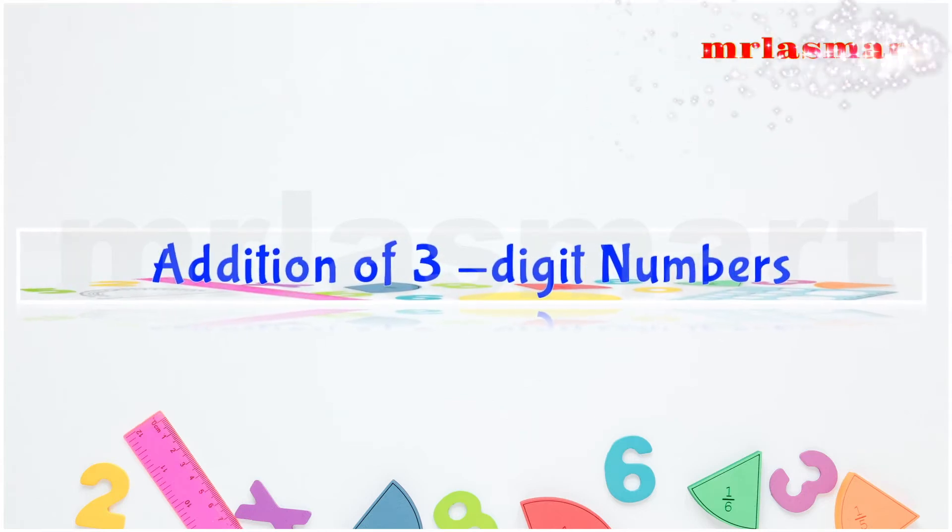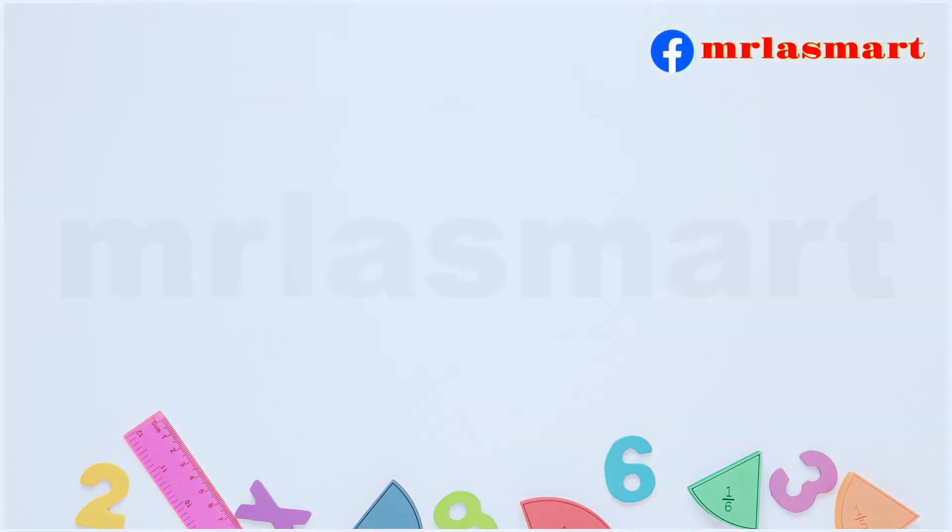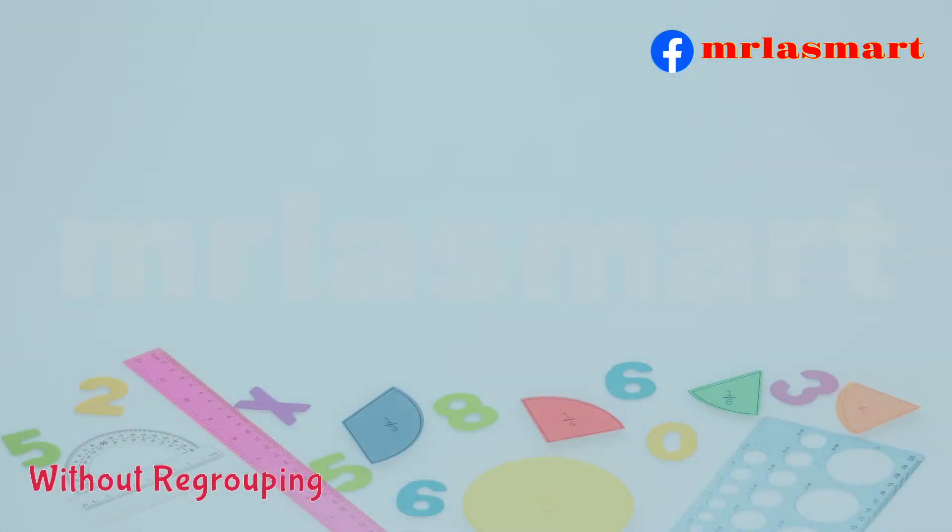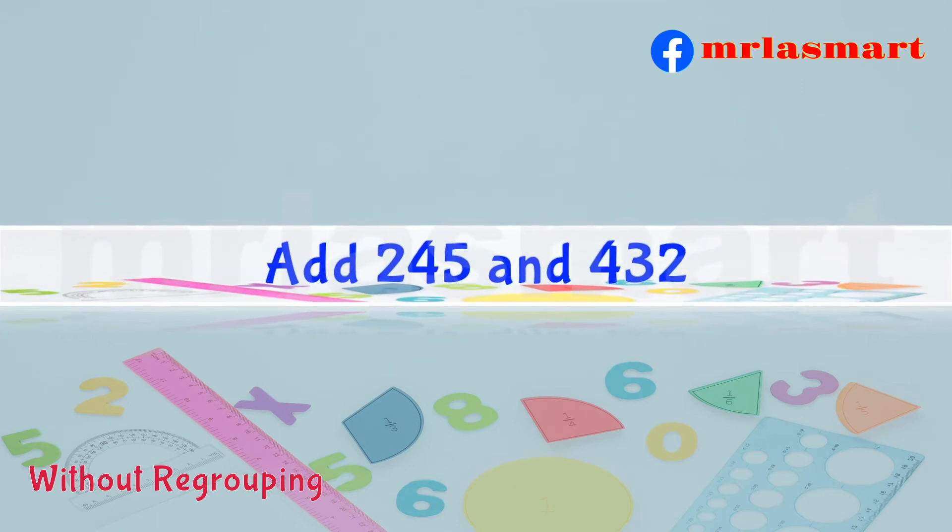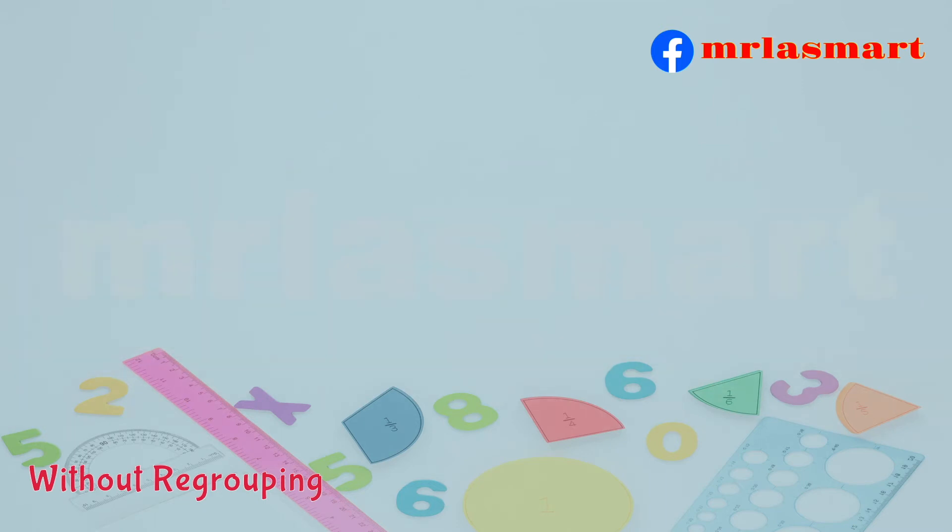Addition of three-digit numbers. Add 245 and 432. Arrange the numbers according to their place values.